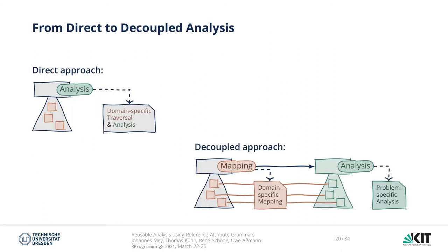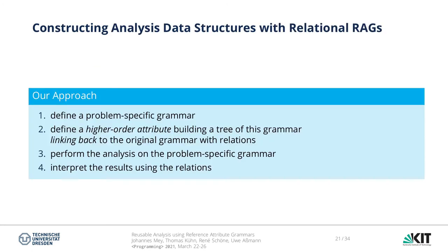Now that we have seen the direct implementation, we can identify the problem. The analysis combines the domain-specific traversal and the problem-specific analysis. Thus, we propose a process to separate the two using a domain-specific mapping. To do this, we follow four steps. First, a problem- or analysis-specific grammar has to be specified. Then, a higher-order attribute has to be defined that constructs an AST of this new grammar from the base AST. Furthermore, the analysis has to be specified and performed on the AST constructed for this purpose. And finally, the results have to be interpreted with respect to the original AST.